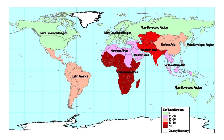Looking at this map, most developing countries have at least a third of their cities that are informal. In Africa, we are talking about 60%. And I'm tracing this directly to the lack of appropriate land documents.